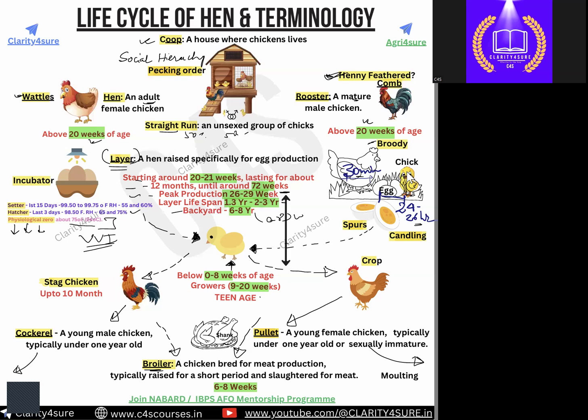The egg can be hatched by giving warmth through the incubator or by the mother bird. Once the egg hatches, it gives rise to a chick. The age classification for a chick is zero to eight weeks of age — we call it a chick only when it is zero to eight weeks of age.